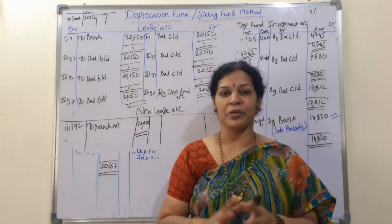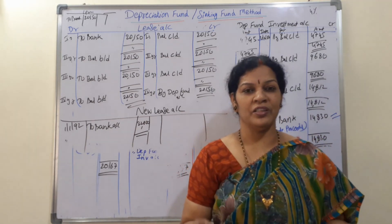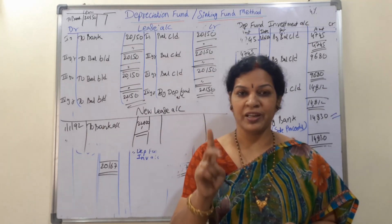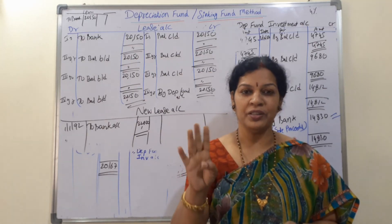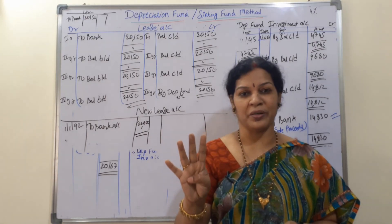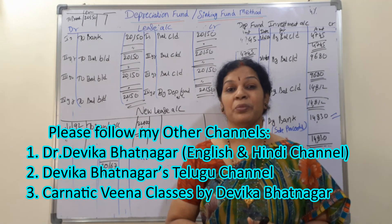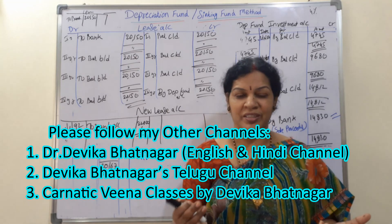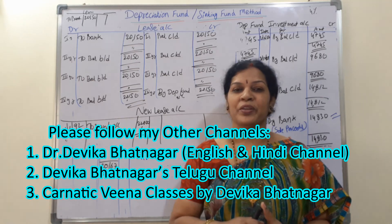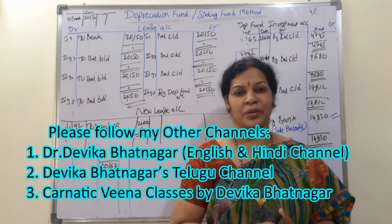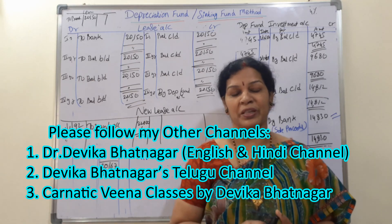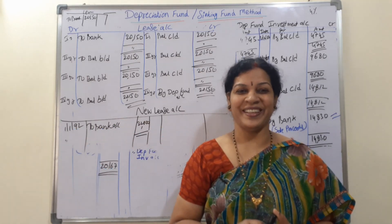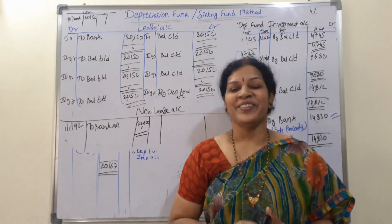With this we have completed almost all the main important topics of depreciation: straight line, diminishing balance, annuity, and sinking fund depreciation fund method. Stay connected - we will work out some more important problems and important subjects. Theory subjects also I will start shortly. Any doubts, mention in the description box. Maximum I try to give you answers for all your doubts.